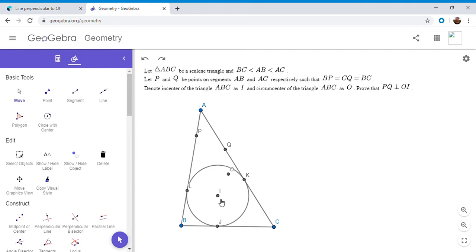I is the incenter of the triangle ABC, and O is the circumcenter. And we want to show that PQ is perpendicular to OI.